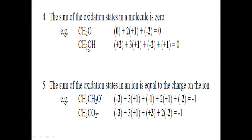Calculating the oxidation state of methanol: carbon is bonded with two hydrogen atoms (plus two), then plus three, then it forms a bond with oxygen giving plus one, then minus two for oxygen and plus one for the hydroxyl hydrogen. The overall oxidation state of the methanol molecule is again zero.